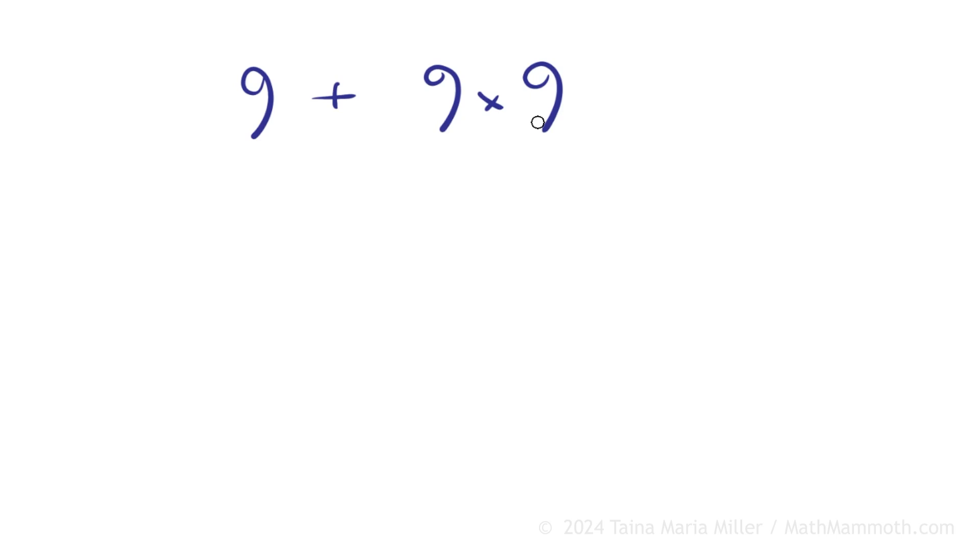Multiplication first, right? But what's 9 times 9? Maybe you haven't studied it. I'll tell you the answer. It is 81. So then it is 9 plus 81 equals 90.